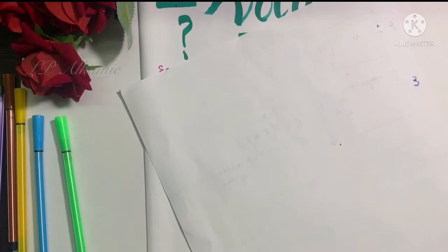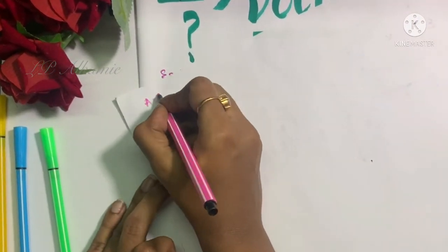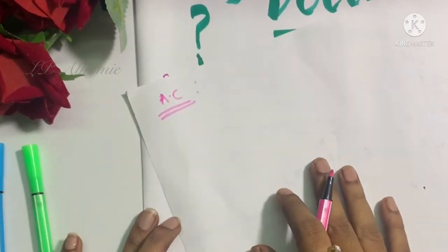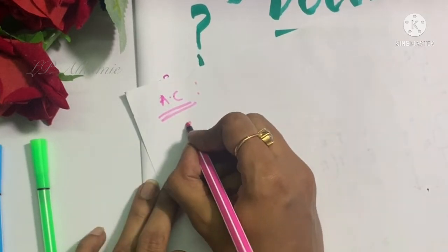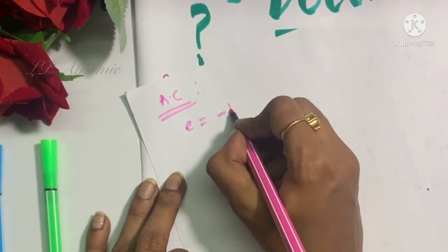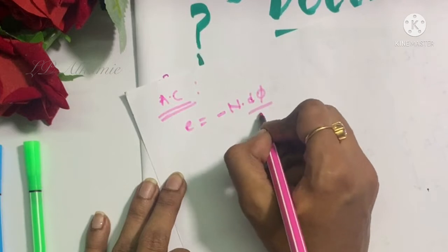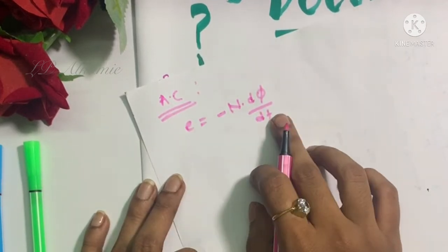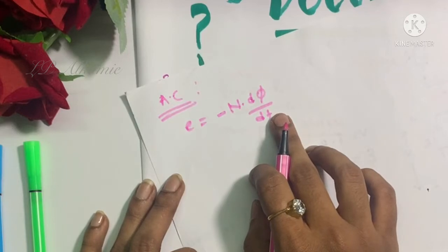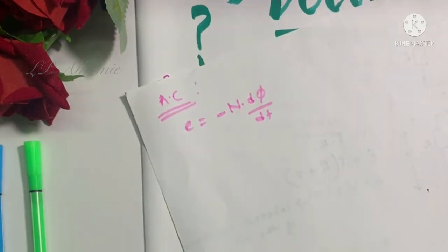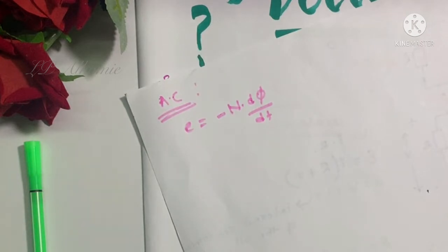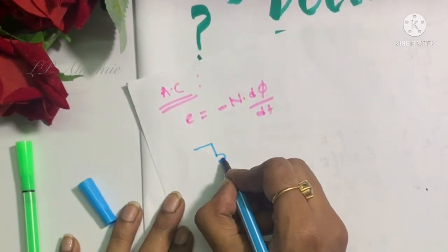Similarly, if you consider an AC circuit, the EMF is given by Faraday's law of electromagnetic induction, where EMF = -N·dΦ/dt, where N·dΦ/dt is the rate of change of flux linkages. The minus sign indicates that the generated EMF opposes its cause, which we are not going to discuss in detail here.